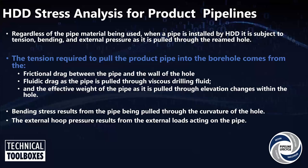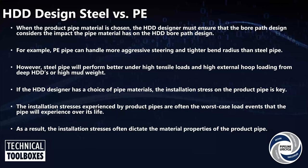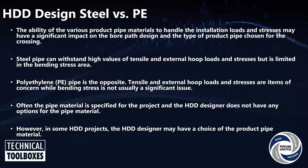We also have the external hoop stress from external loads acting on the pipe — it could be the drilling slurry in the hole, it could be the soil if you lose your hole in certain areas, or even a live load. The ability of our different product pipe materials to handle those installation loads and stresses can have a big impact on our profile when we design it, negotiating those obstacles and trying to stay within those easement points and right-of-ways.